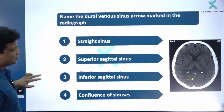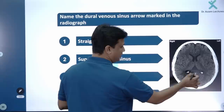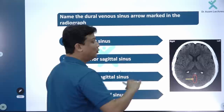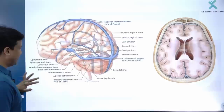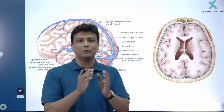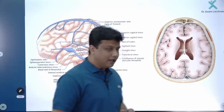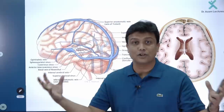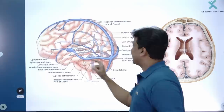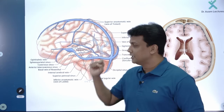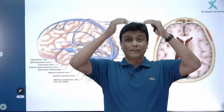Next question: name the dural venous sinus arrow-marked in the radiograph. You can clearly see the arrow mark on a dural venous sinus. In this diagram, dural venous sinuses collect blood from your brain. You can see the superior sagittal sinus and below it the inferior sagittal sinus — both running exactly in the midline, superior and inferior.